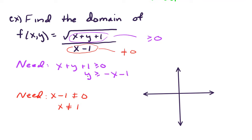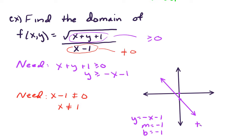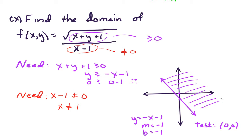We need y greater than or equal to negative x minus 1. This line has a slope of negative 1 and a y-intercept of negative 1. Now this is an inequality, so if we pick a test point like the origin and ask: is 0 greater than or equal to negative 0 minus 1? Yes, that's true. Therefore, the region above the line is the solution set for y greater than or equal to negative x minus 1.